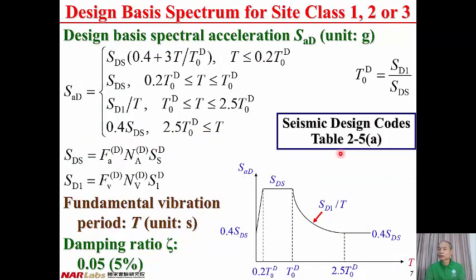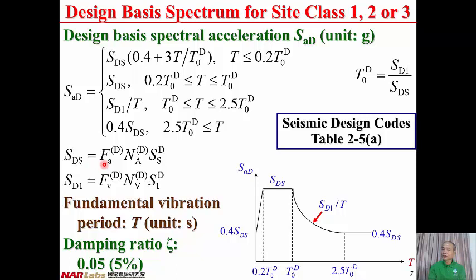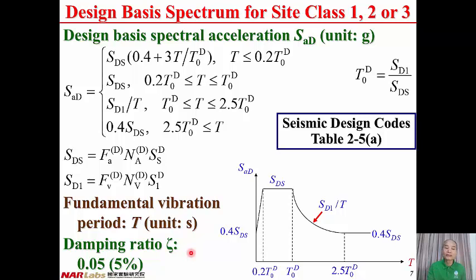From seismic design code table 2-5a, we can get the design-based spectral acceleration for site class 1, 2, or 3. The design-based spectral acceleration is specified by two parameters: SDS and SD1. SDS and SD1 are determined by three factors: the location of the site, the fault distance from the active fault, and the site classification. T0D is the corner period between short period and medium-to-long period, equal to SD1 divided by SDS. Since the damping ratio is fixed to be 5%, the design-based spectral acceleration is a function of only the fundamental vibration period T.